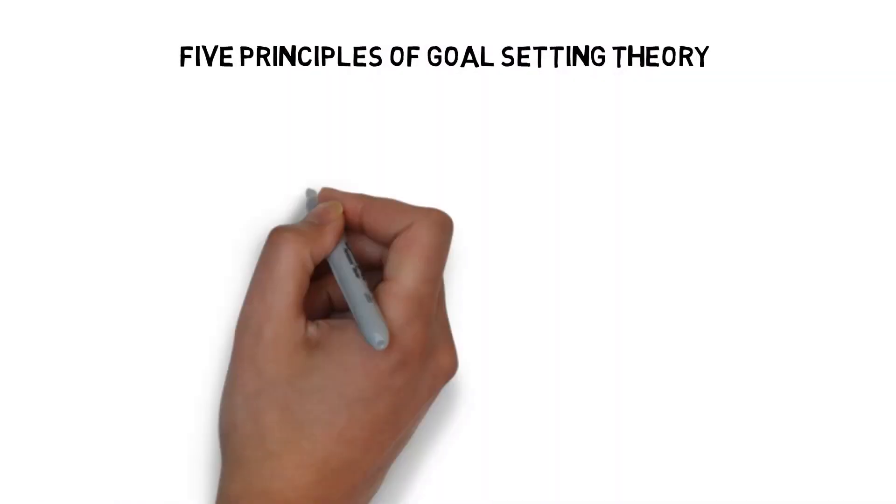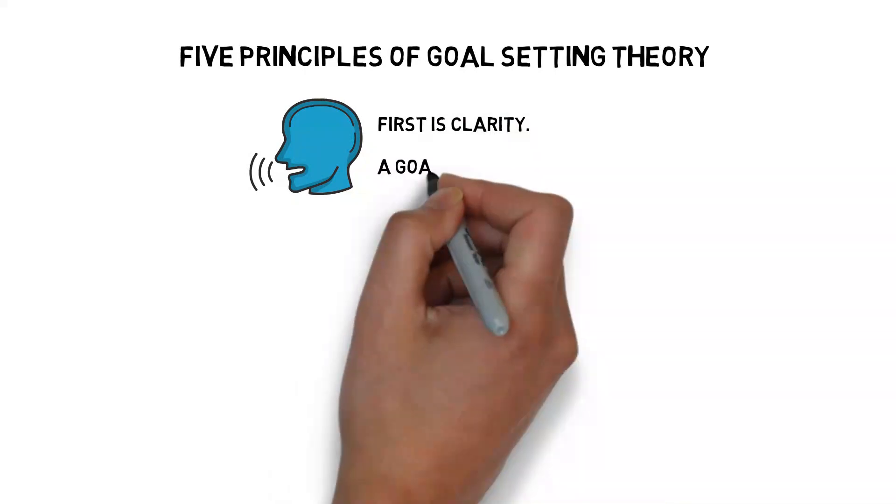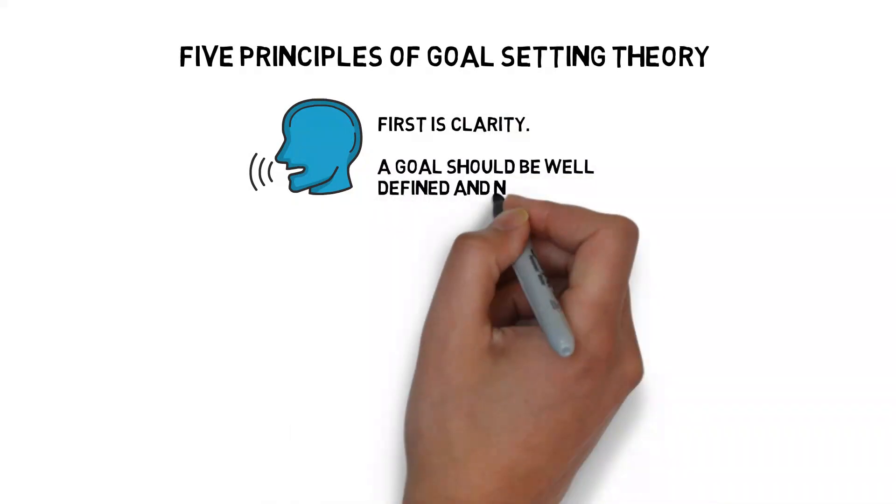It has five principles. First is clarity. A goal should be well-defined and not confusing.